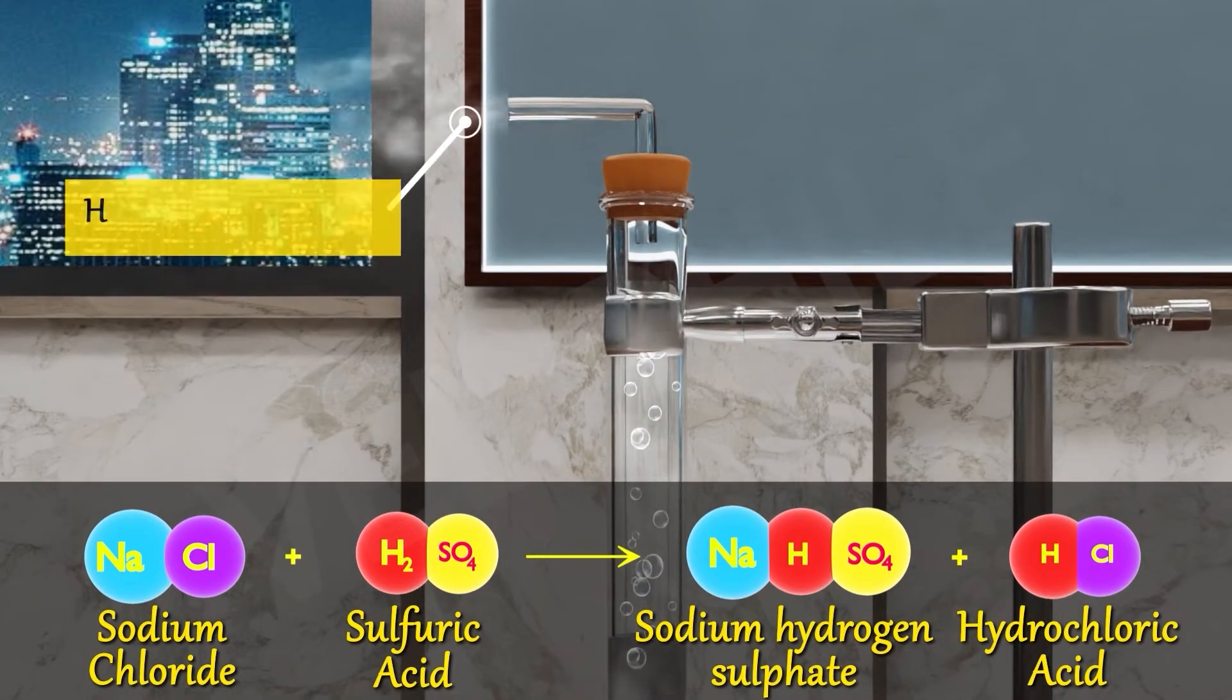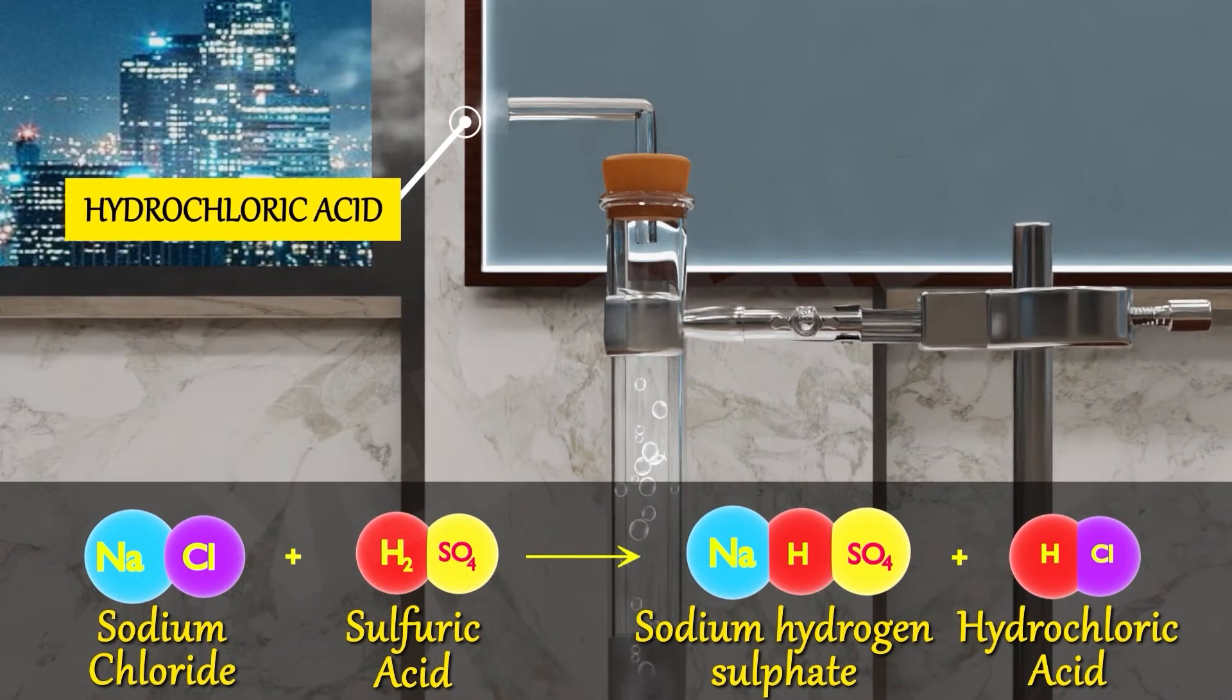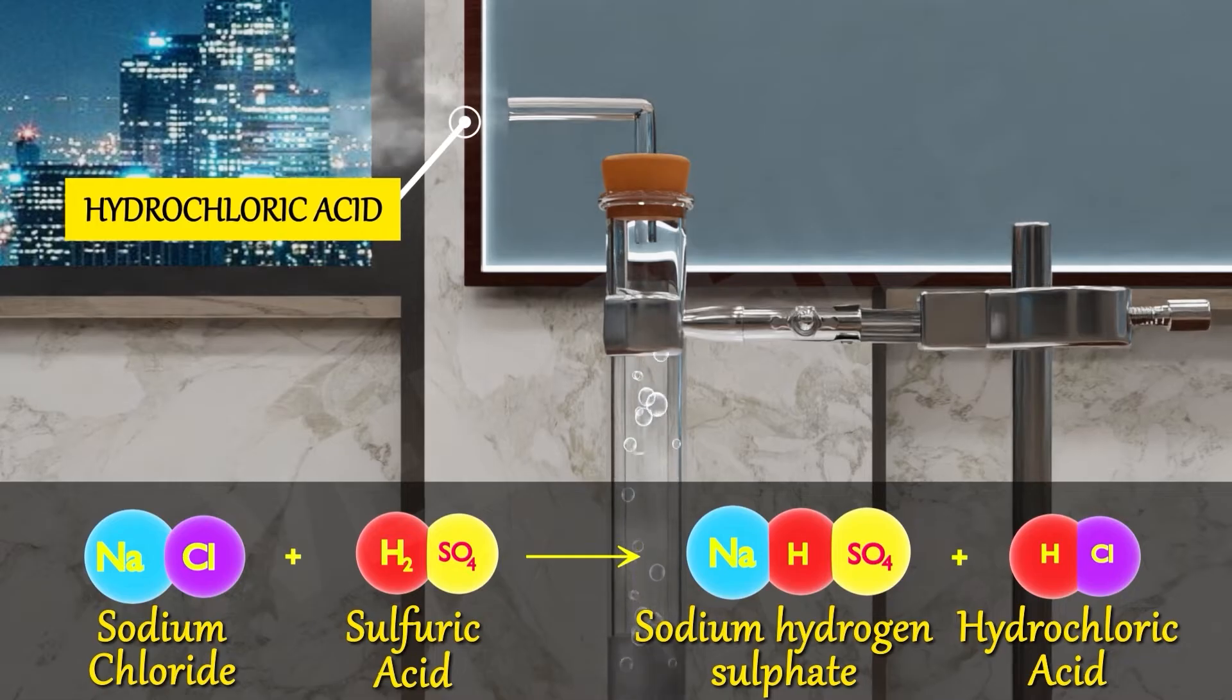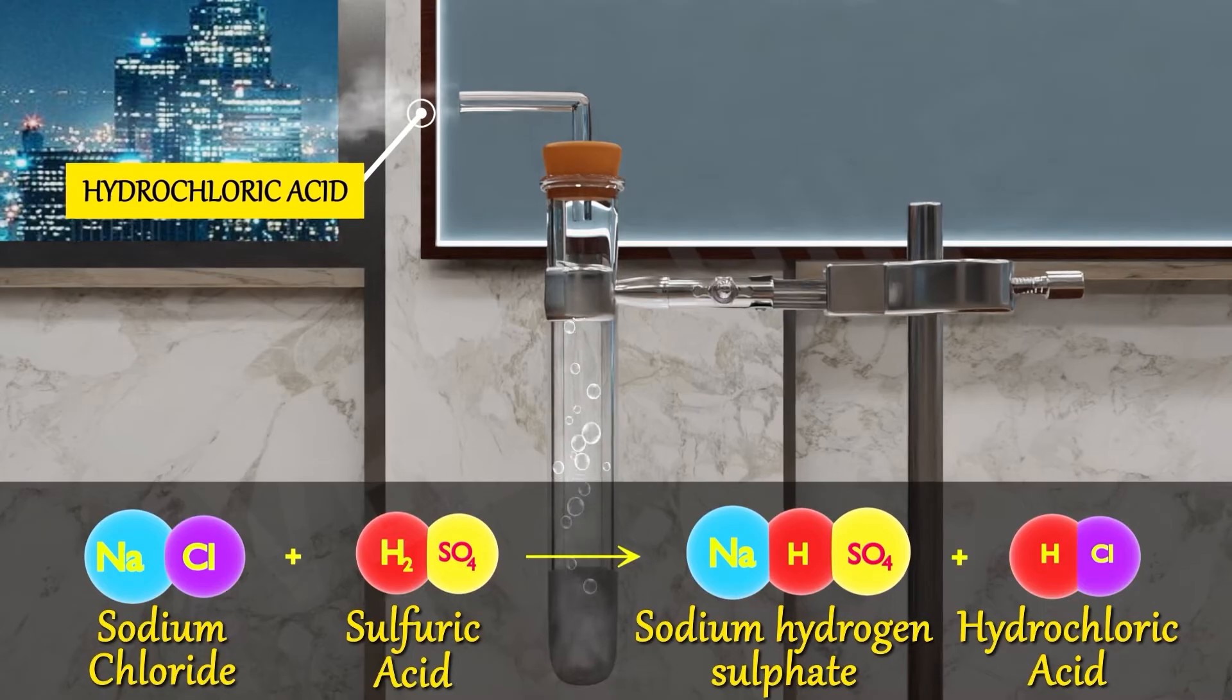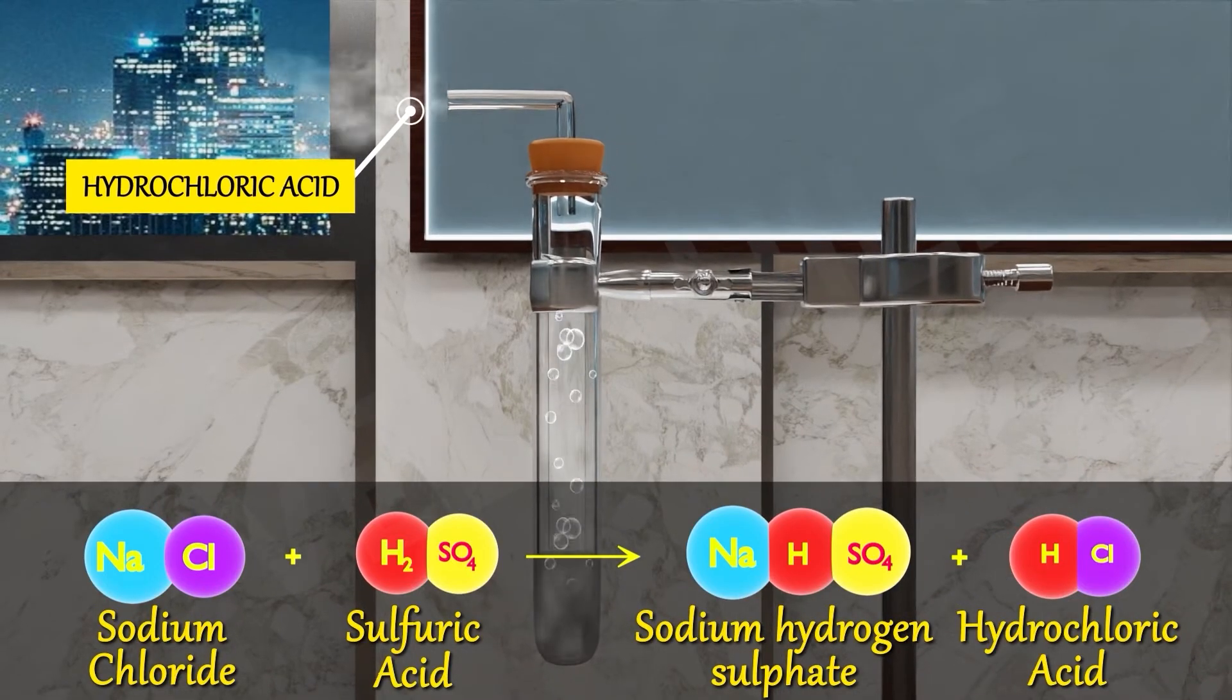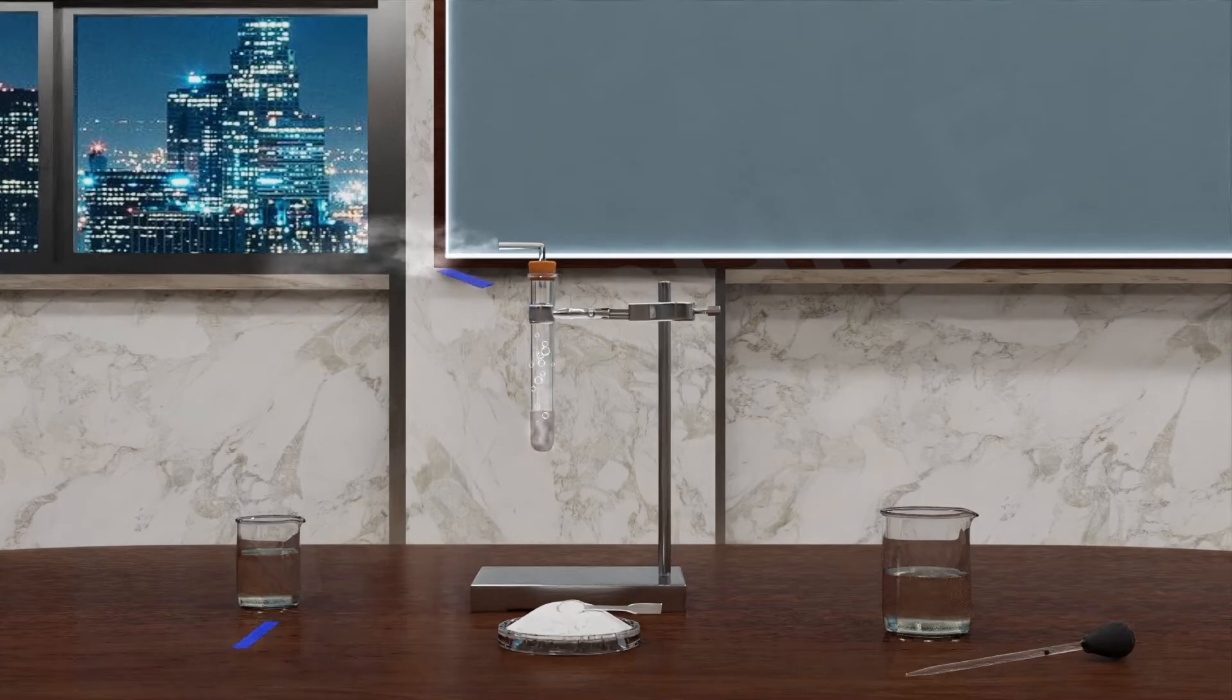This HCl is coming out from this delivery tube, and HCl is an acid. This means acids release H plus ions in water. Without water, they cannot release H plus ions.